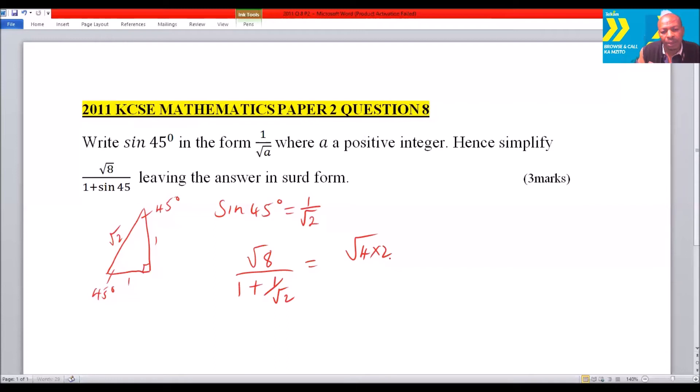Multiply both by √2. This you can multiply by (√2 + 1), all this is divided by √2. This can be written as 2√2 divided by...